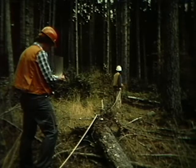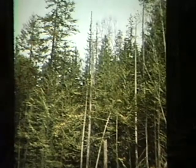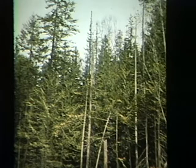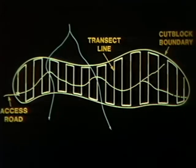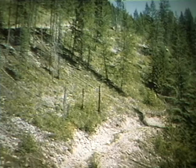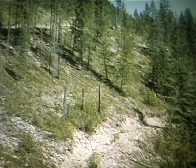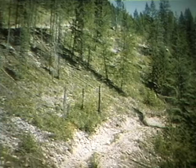Surveys specifically for root diseases are undertaken when more information is required for management purposes. First, the area should be inspected to verify the root disease and judge if root disease is extensive enough to warrant a survey. If the preliminary inspection reveals substantial root disease, lines are run systematically over the area using the access road for a baseline. For each center encountered on the line, the distance across the center from healthy tree to healthy tree is measured, and the total amount of infection on all the lines is indicated as a percentage of the total length.